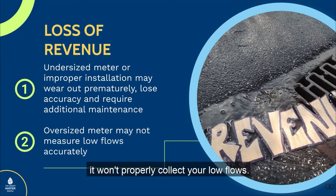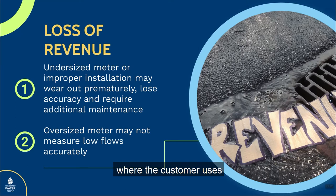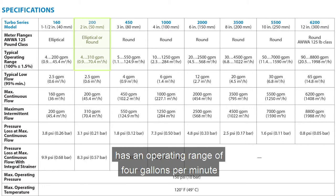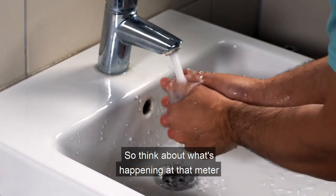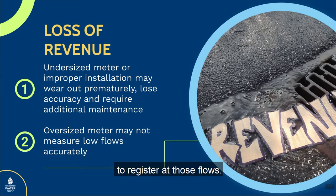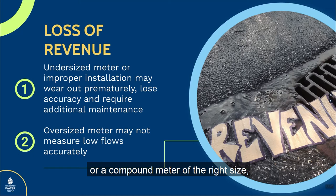If you oversize a meter, it won't properly collect your low flows. For instance, let's say I have an application where the customer uses a quarter of a gallon per minute, let's say 25% of the time. If I have a two-inch turbine meter installed in that application, a two-inch turbine meter has an operating range of four gallons per minute all the way up to 310 gallons per minute. For all the time that the customer is using flows less than four gallons per minute — in this case, 25% of the time they're using a quarter gallon per minute — I'm not collecting those revenues because the meter is not supposed to register at those flows. If I were to change that to either an electronic meter or a compound meter of the right size, now I might be collecting all of those revenues throughout the range of the application.